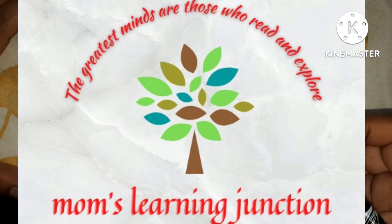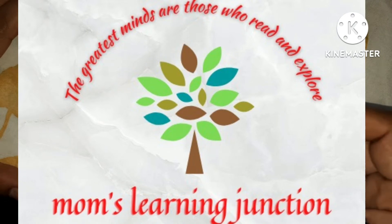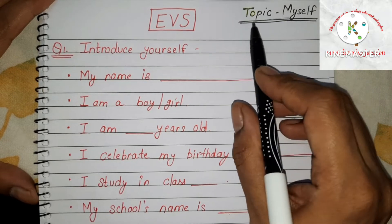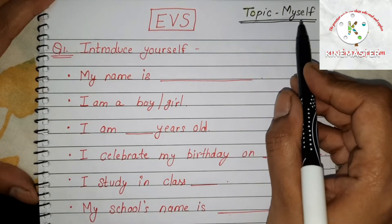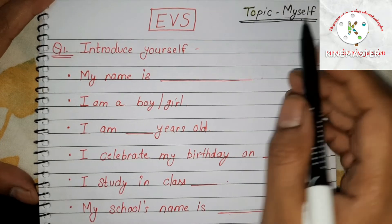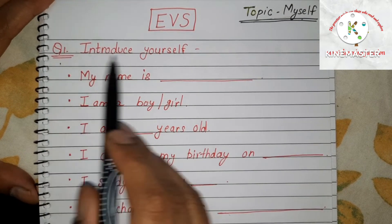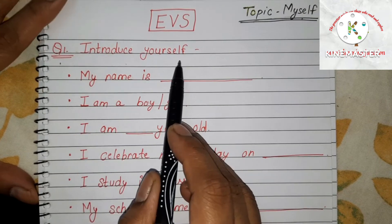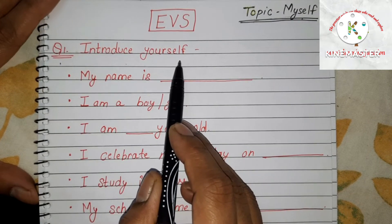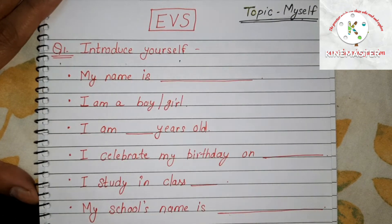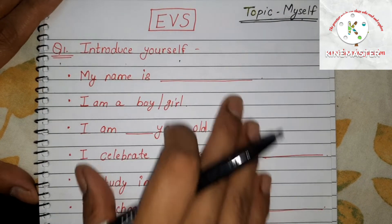Hello friends, today I'm here with Evie's Worksheet Part 1 and the topic covered is myself. The first question is introduce yourself, where the child has to write about himself or herself.